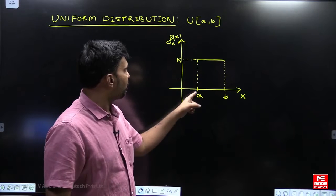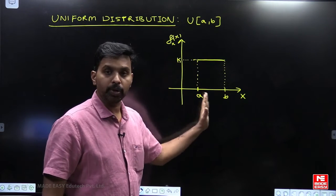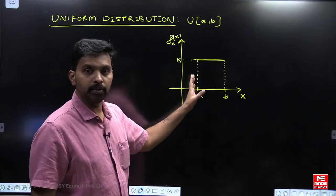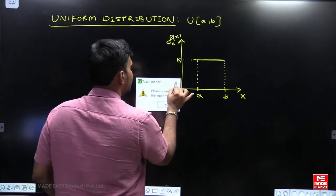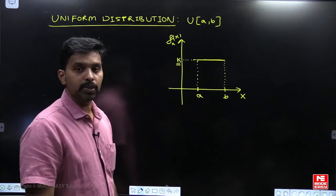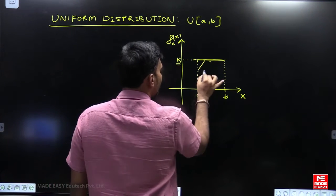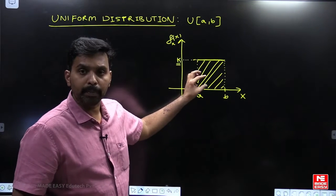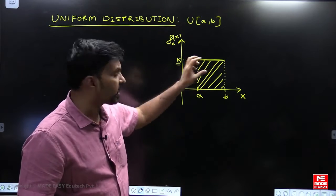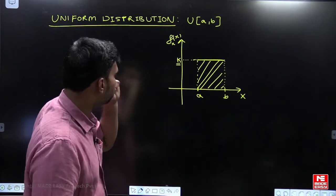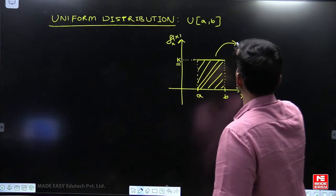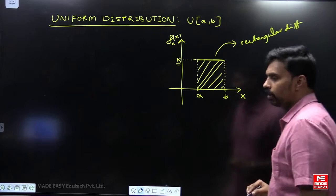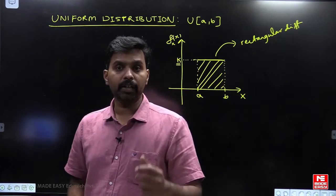So if the probabilities are distributed uniformly for all x belonging to interval (a, b), then this kind of probability curve you are going to see, which is understood as a constant function. The probability distribution of the random variable forms a rectangle, and therefore it is also called rectangular distribution.